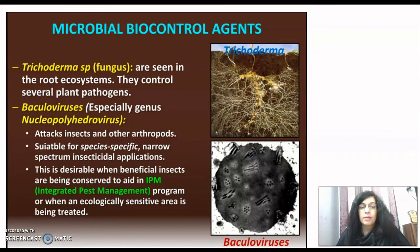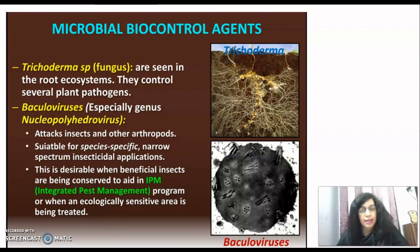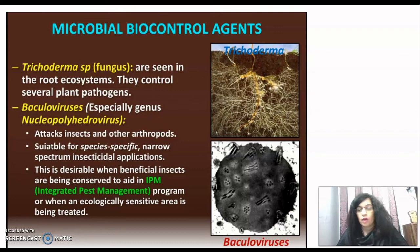Baculoviruses — especially the genus Nucleopolyhedrovirus — attack insects and other arthropods. They are suitable for species-specific, narrow-spectrum insecticidal applications. This is desirable when beneficial insects are being conserved to aid in IPM, which stands for Integrated Pest Management. They are also used when an ecologically sensitive area is being treated, because Baculoviruses are species-specific and do not act as broad-spectrum agents — only the target pest species are destroyed while other species in the sensitive area are protected.